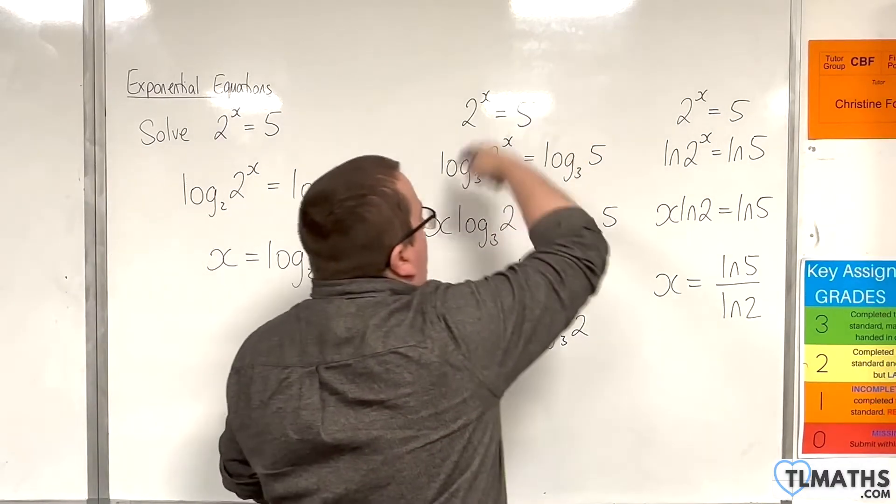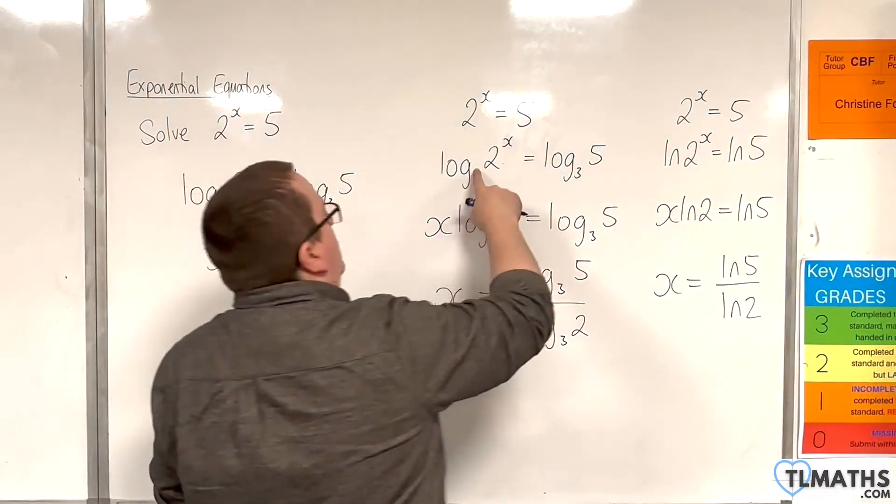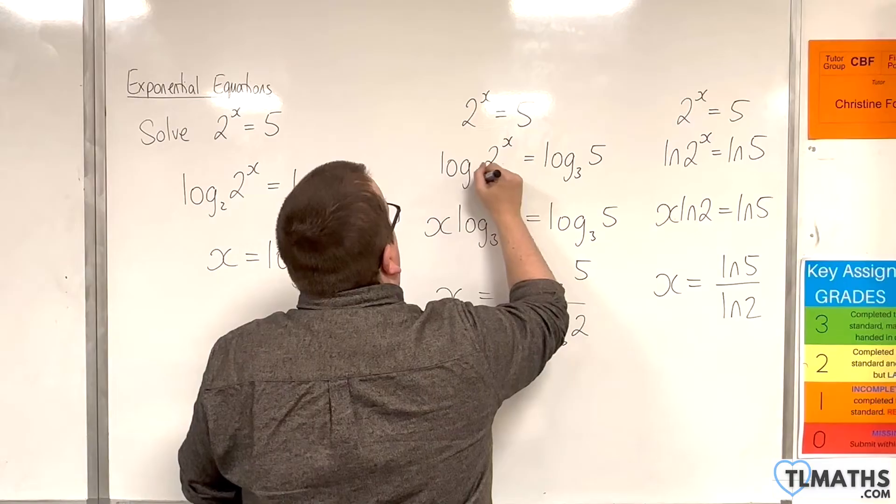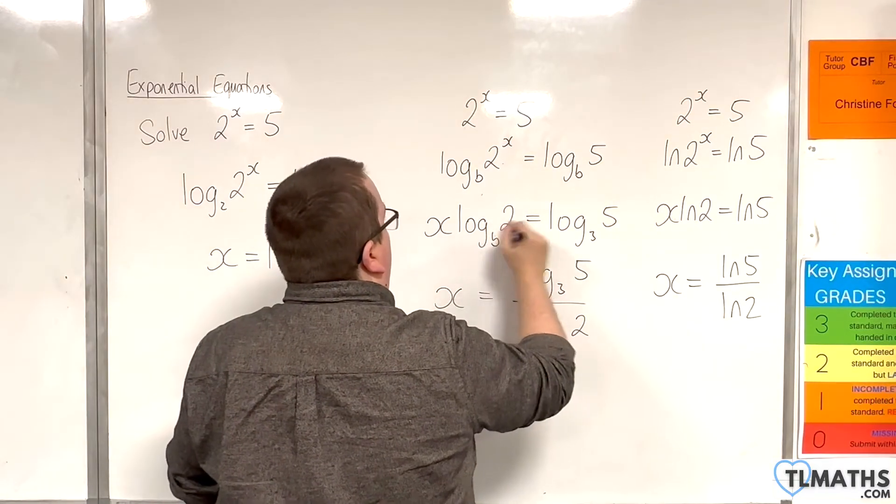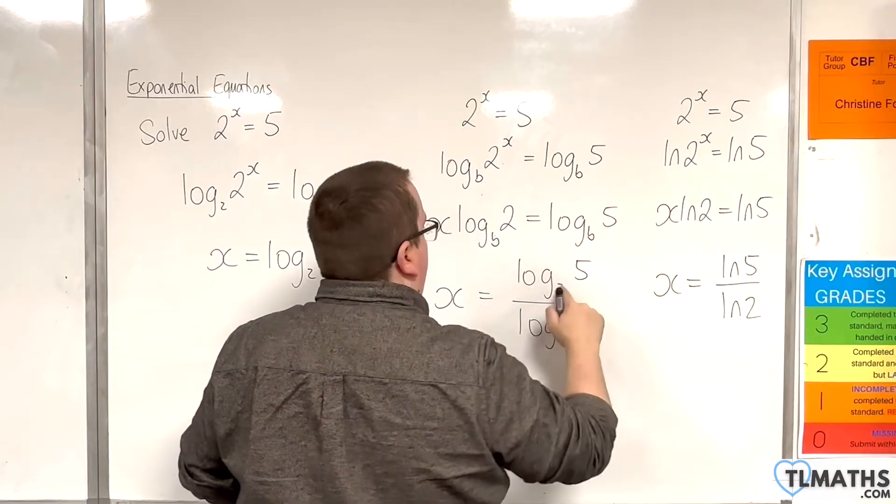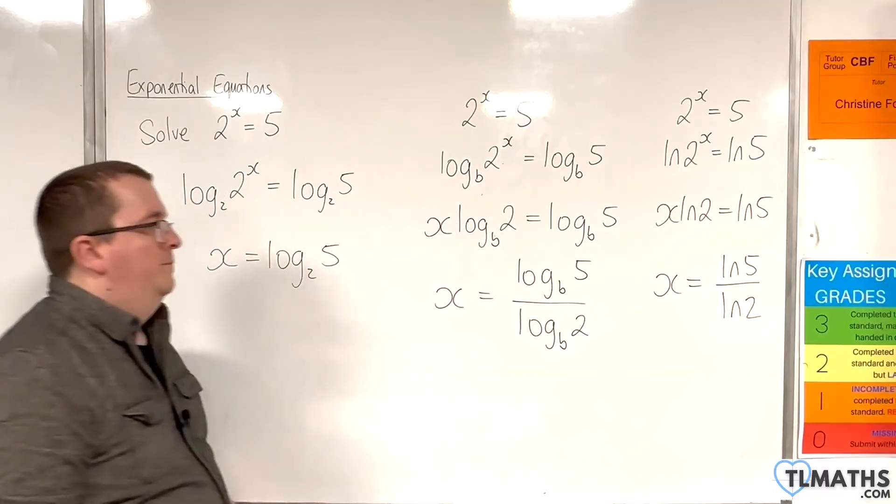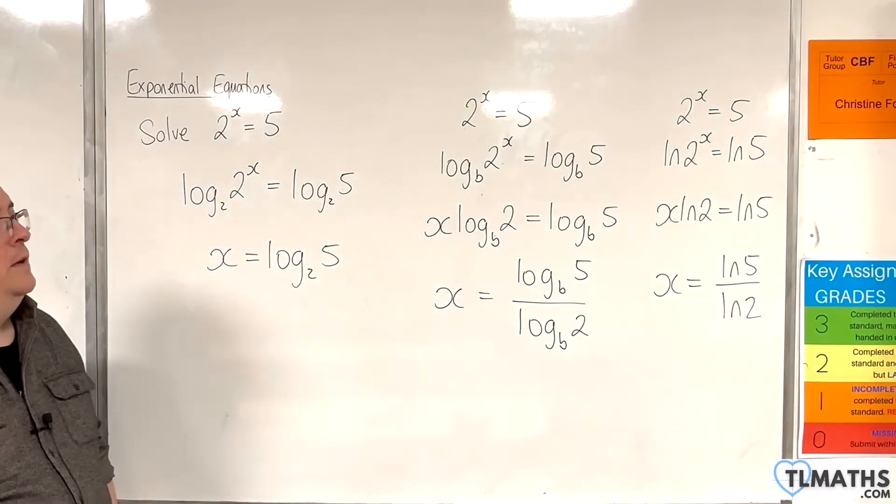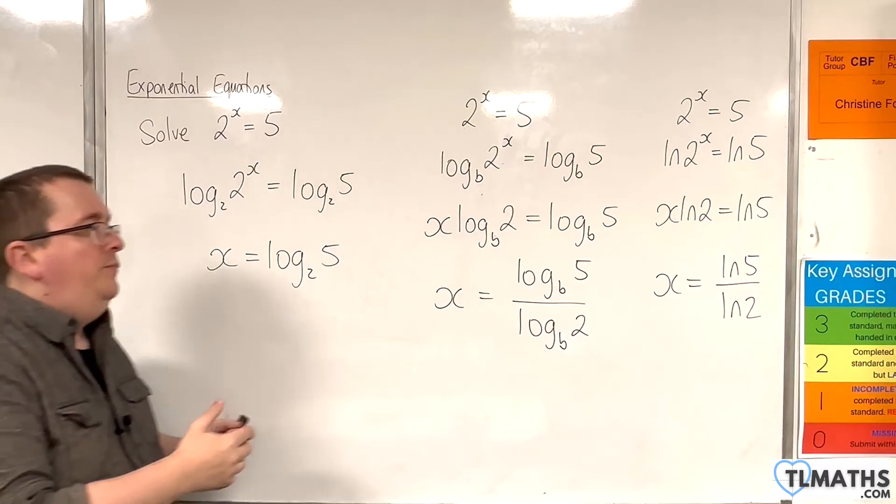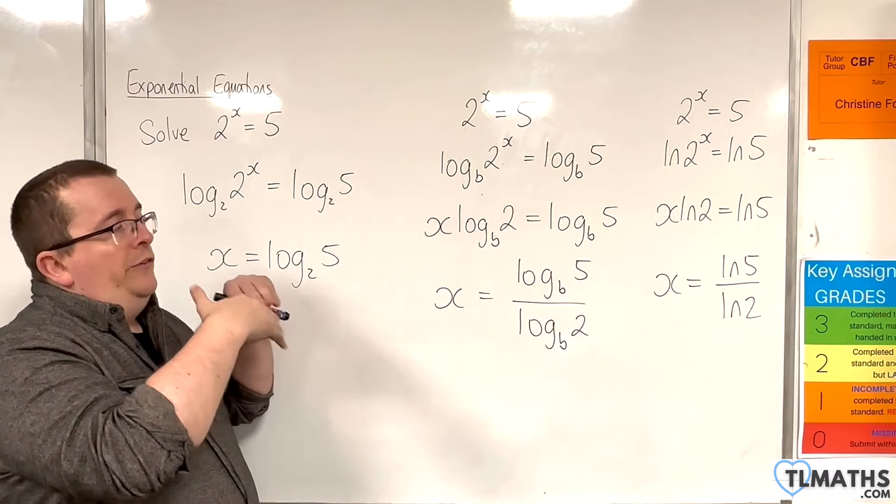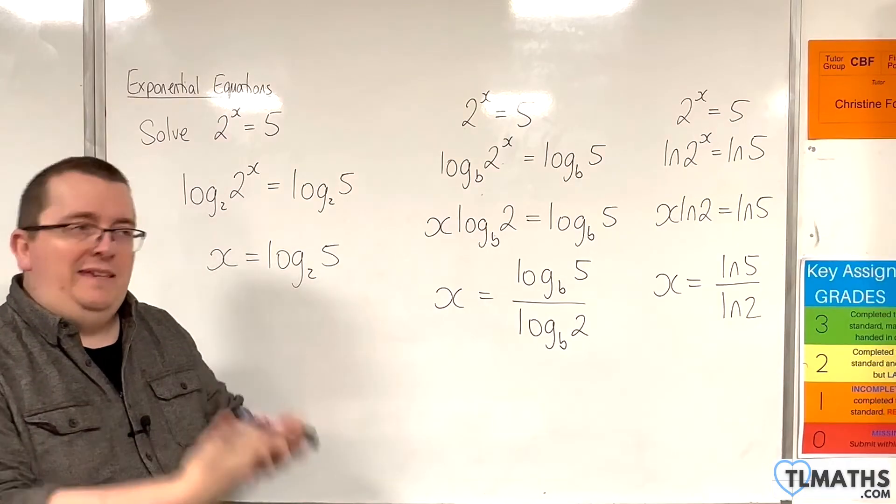Now, by rights, I could have chosen any base to work with. So, if I just chose base B, then these would have been the steps. So, logging both sides, essentially, I've got free reign over which logarithm base I use.